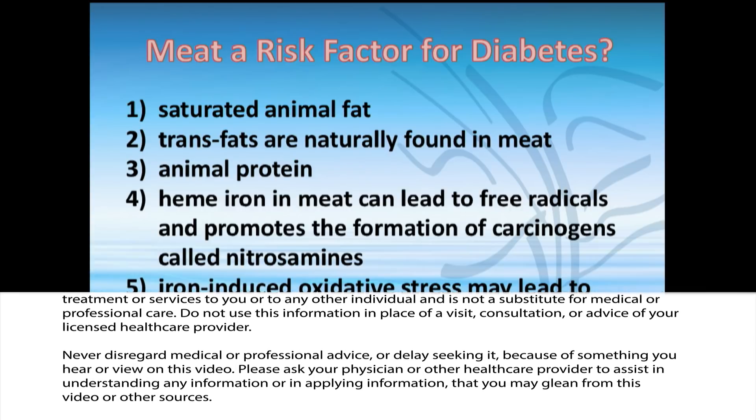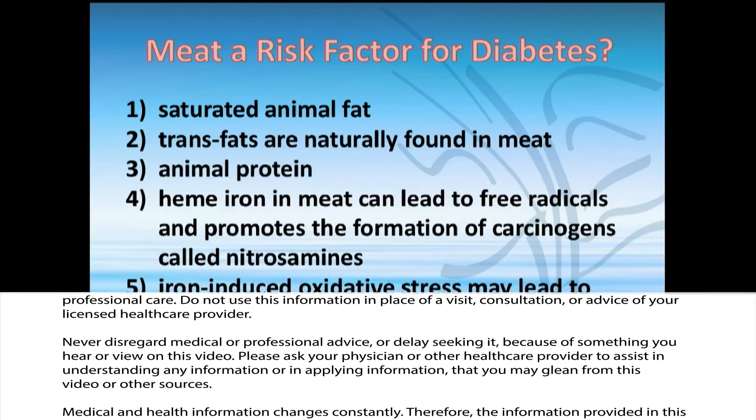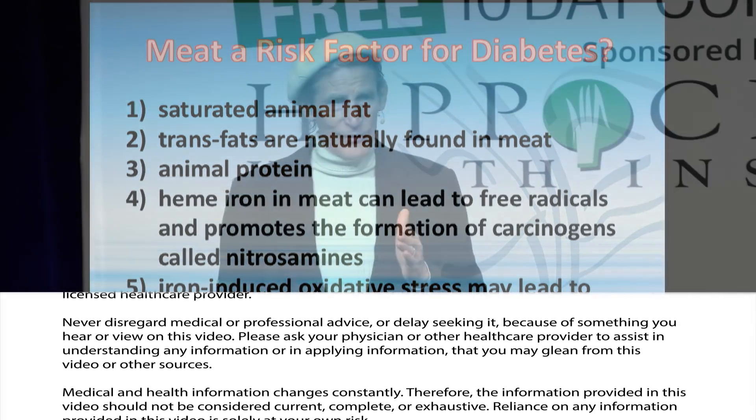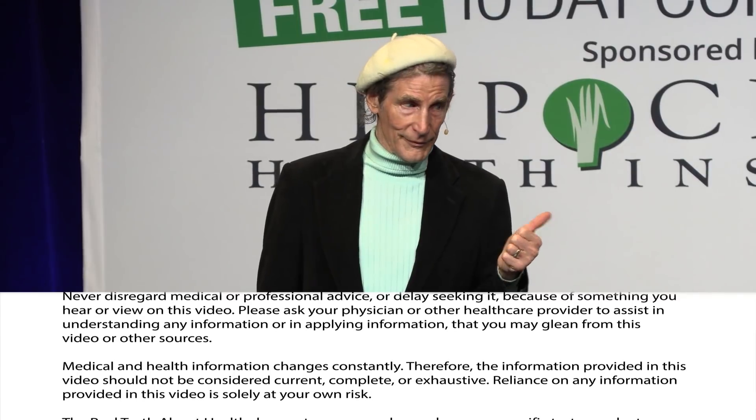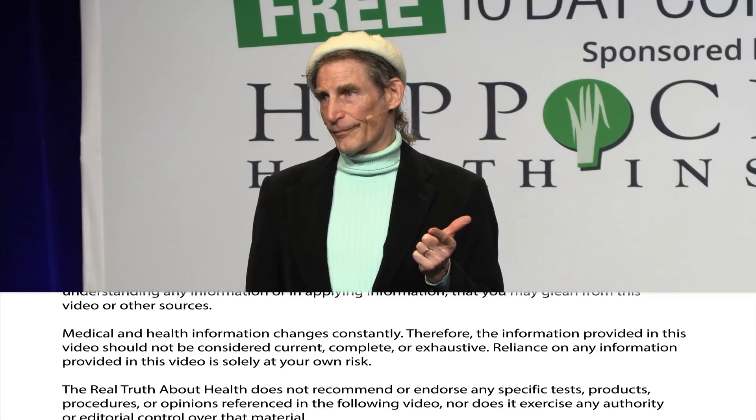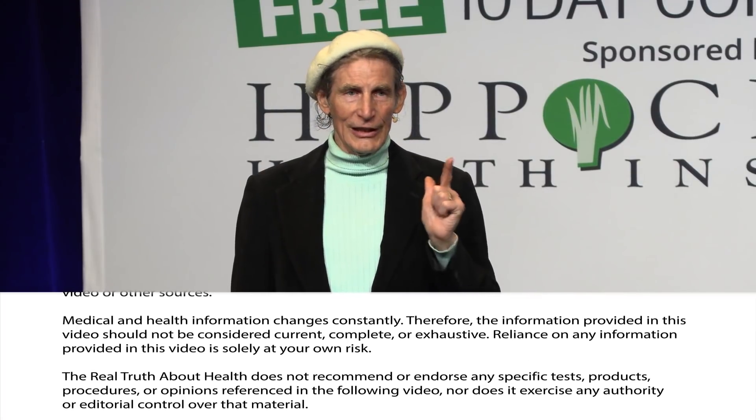What's the problem with animal protein? Well, there are lots of problems. First of all, animal protein in itself increases insulin resistance. Second, animal protein has leucine and methionine. Leucine actually kills the beta cells of the pancreas — that's not a problem you see in the vegan world. Animal protein also accelerates aging.